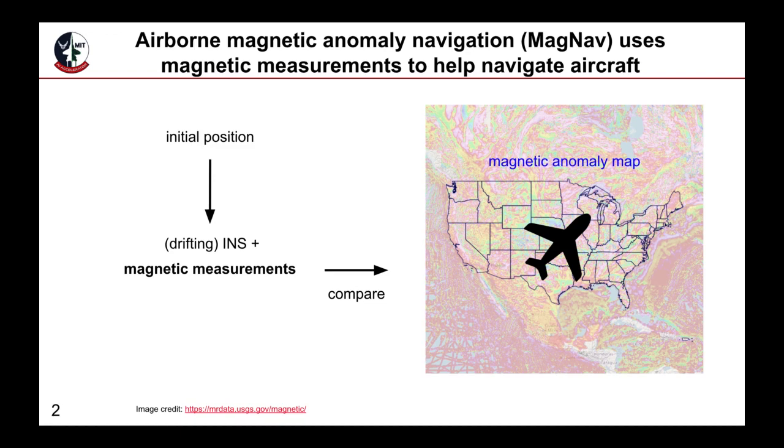The aircraft has an inertial navigation system that can estimate position, but the position error will drift over time due to the double integration from acceleration measurements. Magnetic measurements are also taken and essentially compared to a known magnetic anomaly map to increase the position estimate accuracy. Anomaly here more or less refers to the magnetic variation in the Earth's crust.